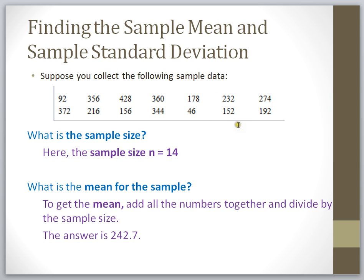Suppose this is my data set. The sample size is the number of data points or pieces of data that I have. In this case, my sample size is 14. Our sample size is always represented by the letter N. To find the mean of any sample, you add all the values together and then divide by the total number of values. The mean here is 242.7, dividing the sum of all values by 14.